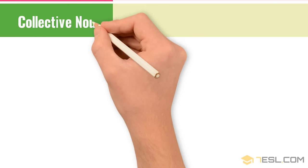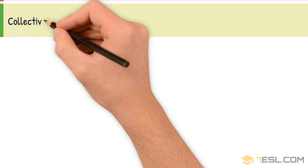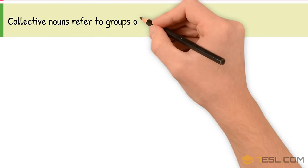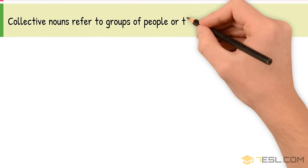Collective Noun. Collective nouns refer to groups of people or things. Examples: team, choir, army.